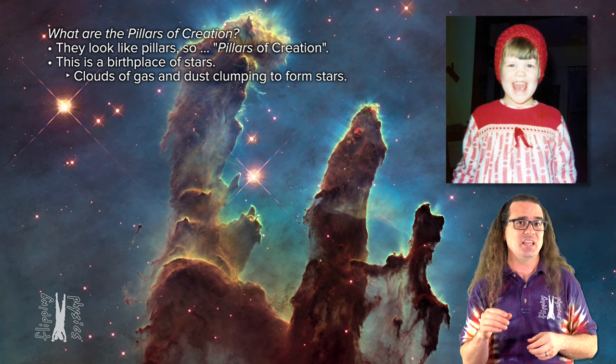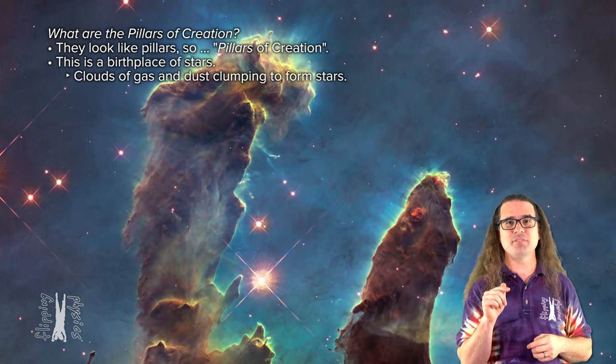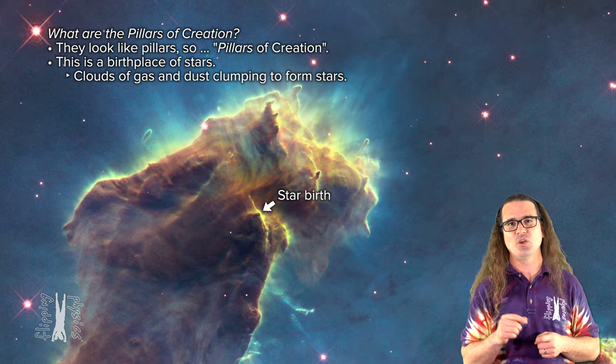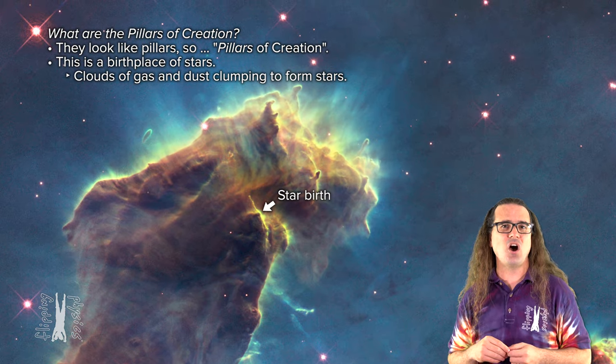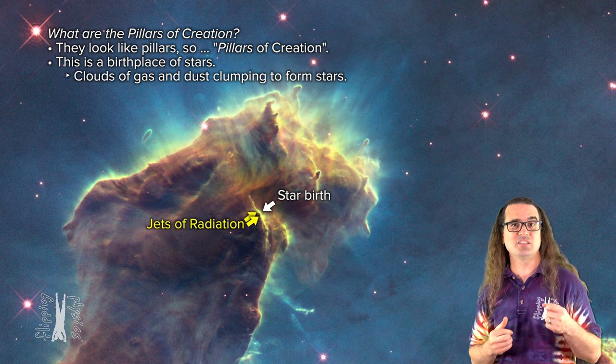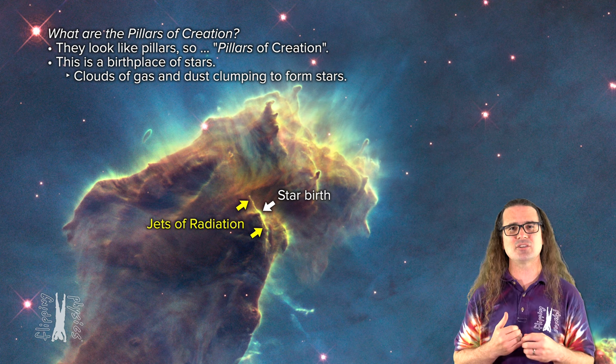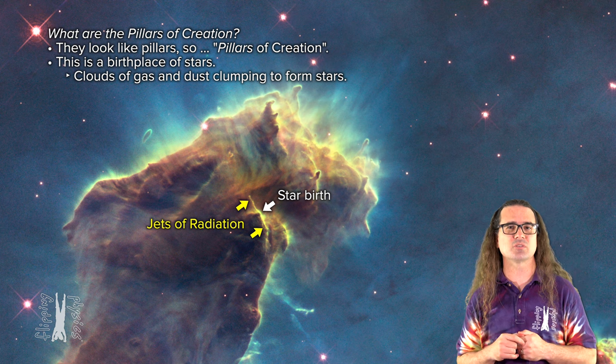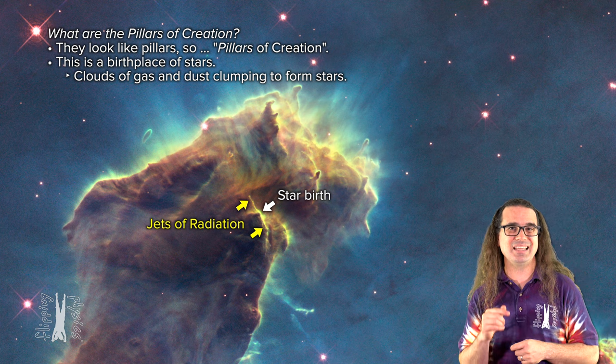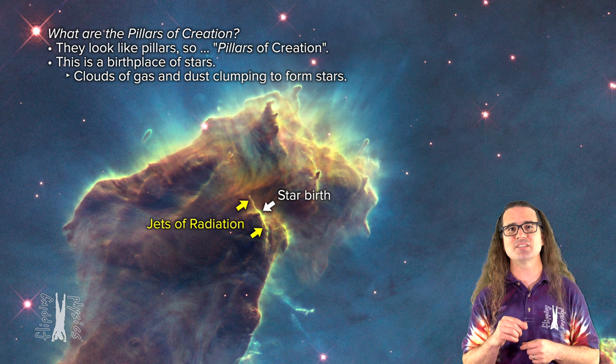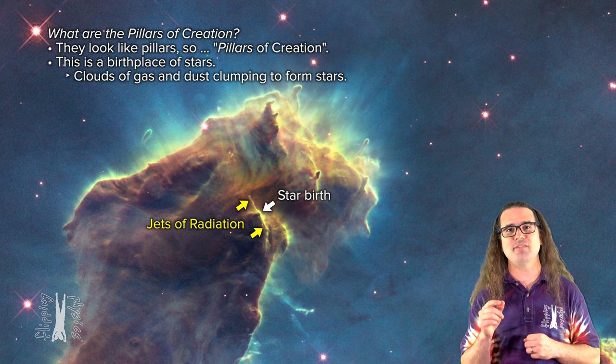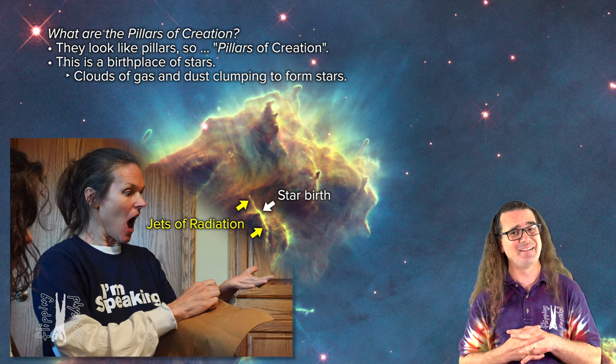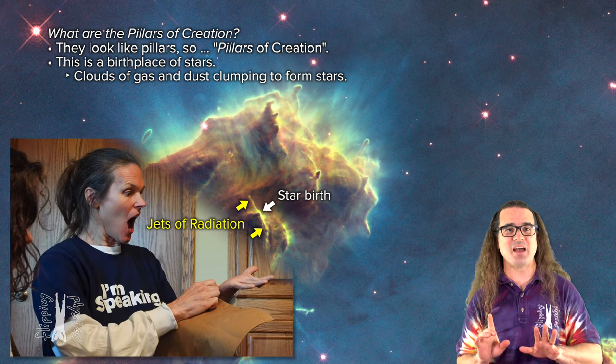In fact, if we zoom in on the top of the left-most pillar, we can see what is most likely a star being born. When stars form, they often eject giant jets of radiation in opposite directions. This bright line is likely the jets from a newborn star. Evidently, these jets are moving away from this new star at about half a million miles per hour, which is pretty cool. I know, Kate.